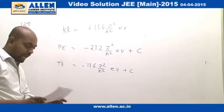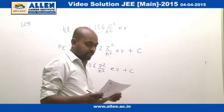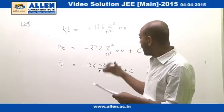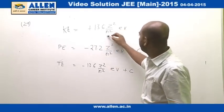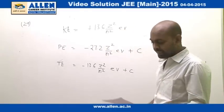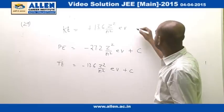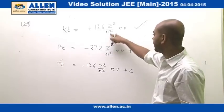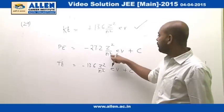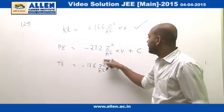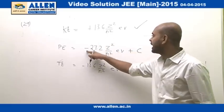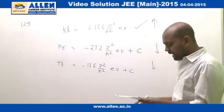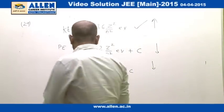In this question, there is a transition from an excited state to the ground state, so the value of n decreases. If n decreases, then kinetic energy increases because n is in the denominator. Similarly, the potential energy term: as n decreases, the magnitude increases, but because it has a negative sign, the potential energy decreases.